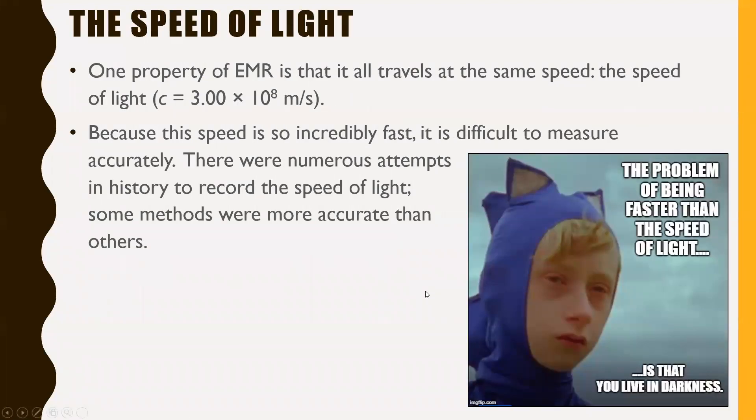So the speed of light. One property of EMR, electromagnetic radiation, is that it all travels at the same speed, the speed of light. Now the speed of light is often denoted by the letter C. Sometimes we use the letter V instead just for velocity, but C in particular is referring to the speed of light. It's 3.00 times 10^8 meters per second. Because this speed is so incredibly fast, it is difficult to measure accurately. It took a long time before people were able to actually do this. So there were numerous attempts in history to record the speed of light. Some methods were more accurate than others.